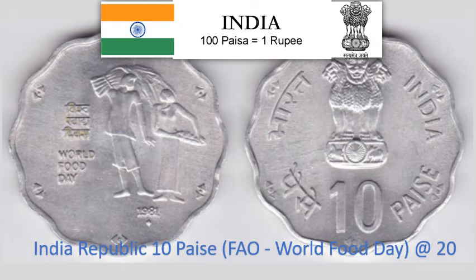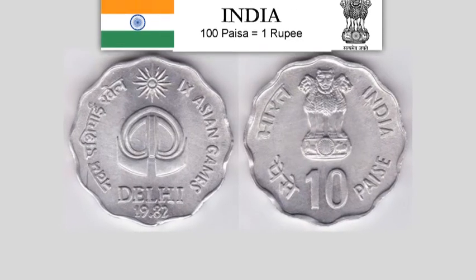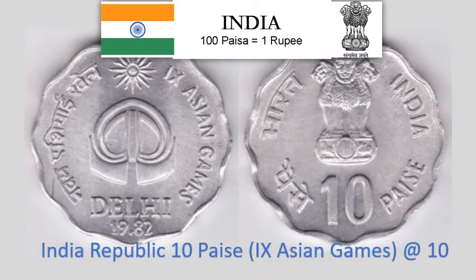India Republic 10 Paise 1981 — Circulating Commemorative Coin, F.A.O. World Food Day. 2.3 gram Aluminium scalloped coin with 12 notches, 26 mm diameter. Krause Reference No. 36. Approximate market value Rs. 20.